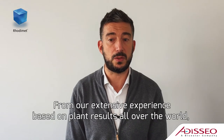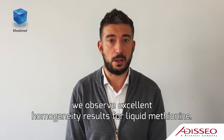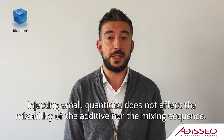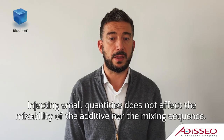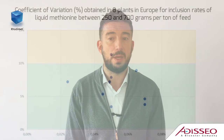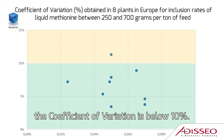From our extensive experience based on plant results all over the world, we observe excellent homogeneity results for liquid methionine. Injecting small quantities does not affect the mixability of the additive nor the mixing sequence. Data collected in the field show that for inclusion levels of liquid methionine from 250 grams to 700 grams per tonne of feed, the coefficient of variation is below 10%.